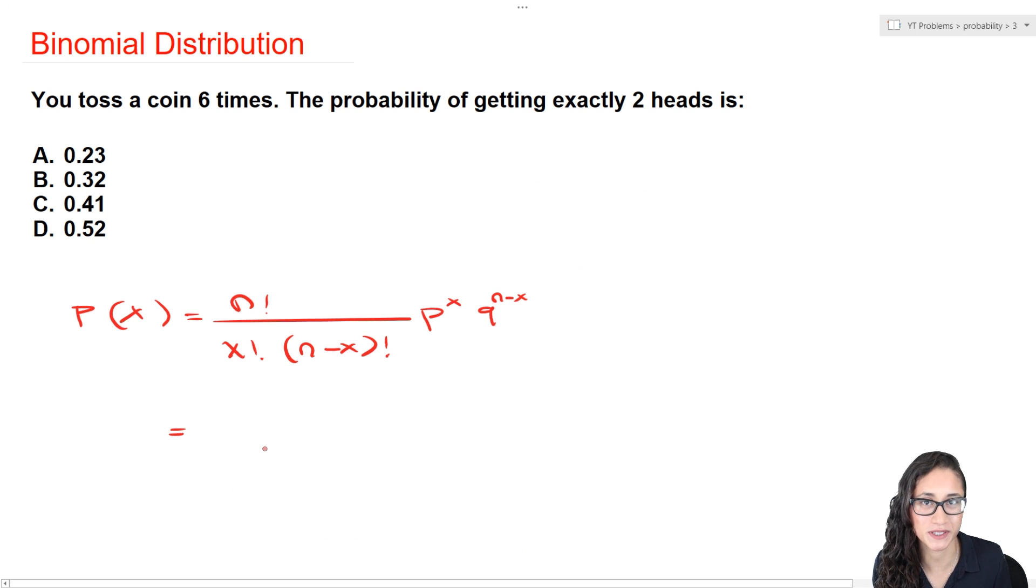So N here is going to be six because that's the number of trials. We're tossing this coin six times. Now X is going to be two because we're trying to get the probability of getting exactly two heads.